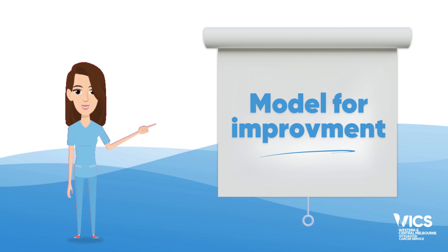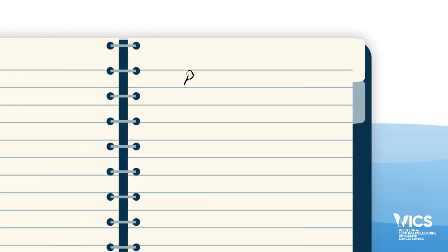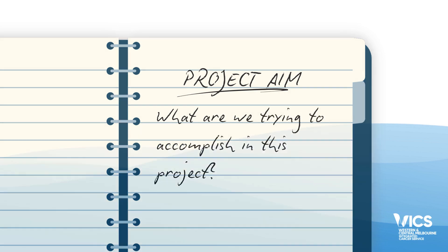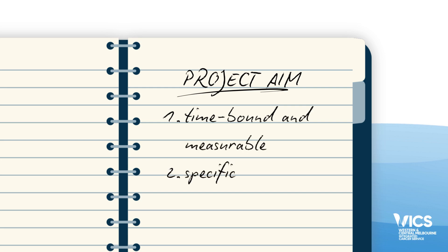There are three fundamental questions to answer, which can be addressed in any order. Question one: what are we trying to accomplish in this project? This guides you in setting the project aim. Your project aim should be time-bound and measurable — how much by when. It defines the specific population whose lives will be affected by the improvement effort and identifies where the improvement is taking place.